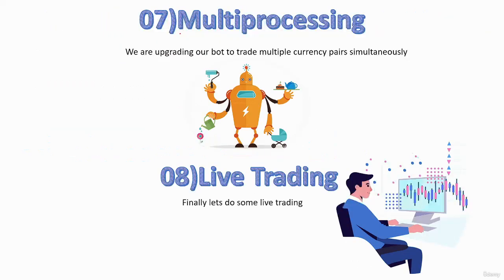In the seventh section of the course, we are discussing about multiprocessing. We are upgrading our bot to trade multiple currency pairs at the same time.